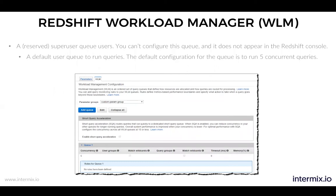That means at any given point in time, you can run five concurrent queries. Now Redshift allows you to add more queues — you can see this here, this blue button, 'Add queues.' So those are the user-defined queues. You can add more queues. The key concept behind it is to separate certain queries from each other, and this is a concept we're going to go into during this webinar.